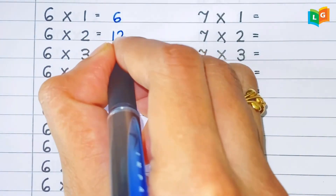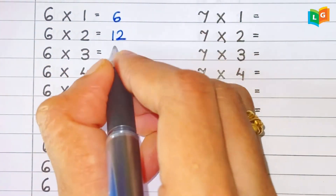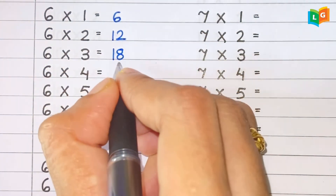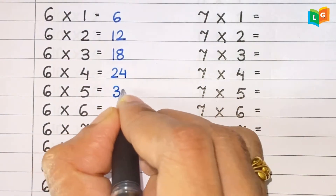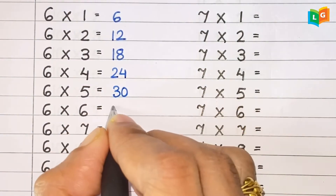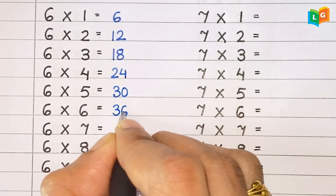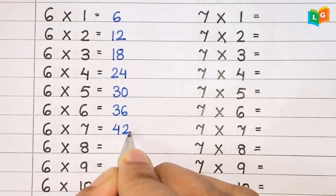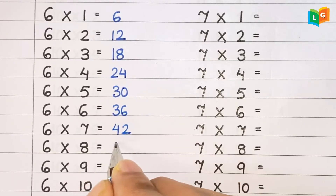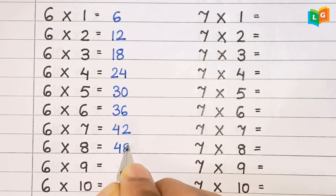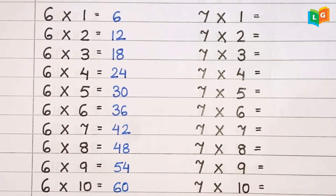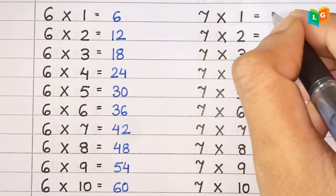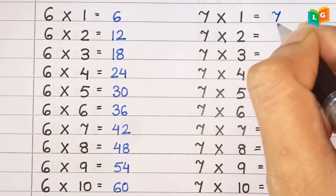Now let's see table of 6. 6 1s are 6, 6 2s are 12, 6 3s are 18, 6 4s are 24, 6 5s are 30, 6 6s are 36, 6 7s are 42, 6 8s are 48, 6 9s are 54, 6 10s are 60.